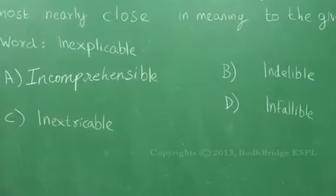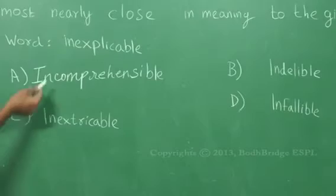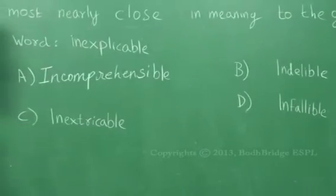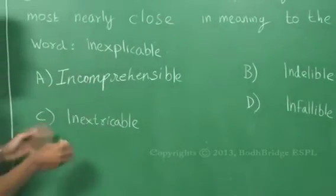Option C: inextricable. Option D: infallible. So the word is inexplicable and we need to find the synonym. Basically, inexplicable is not explicable.